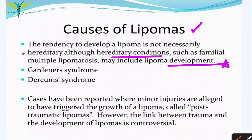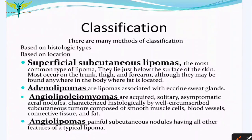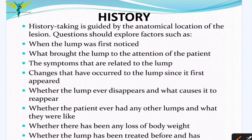You should remember that familial multiple lipomatosis, Gardner's syndrome, or Dercum's syndrome can also cause lipomas. Some cases have been reported where minor injuries have triggered the growth of a lipoma — that is called post-traumatic lipoma — however this is still controversial. Lipomas are classified into superficial subcutaneous lipoma, adenolipomas, angioliomyomas, and angiolipomas.